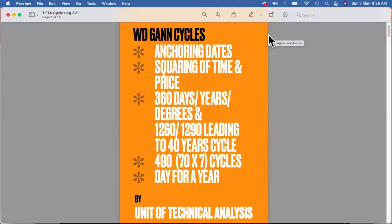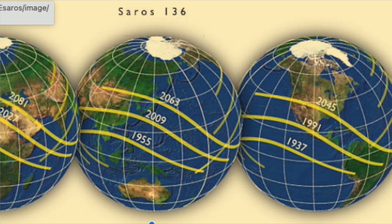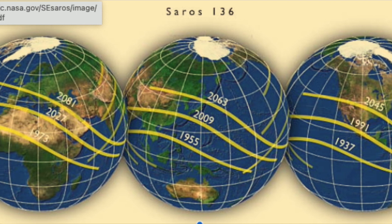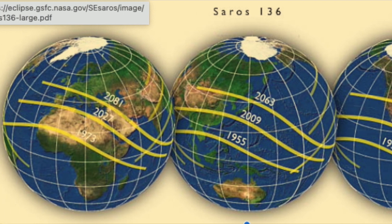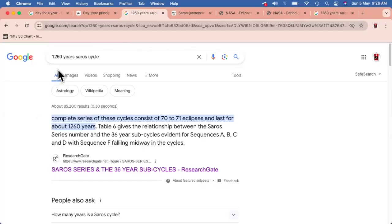Hello everyone, today we are going to see how 1260 years are linked with the Saros cycles. If you go on Google and just type 1260 years cycles, what you get is the details which read: the complete series of these cycles consist of 70 or 71 eclipses and last for almost 1260 years.